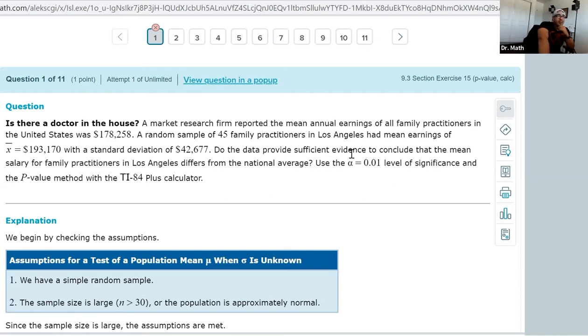Do the data provide sufficient evidence to conclude that the mean salary of practitioners in LA differs from the national average? We're using a significance level, the level of significance of 0.01. That's our alpha level, 0.01, and we're going to use the p-value method.